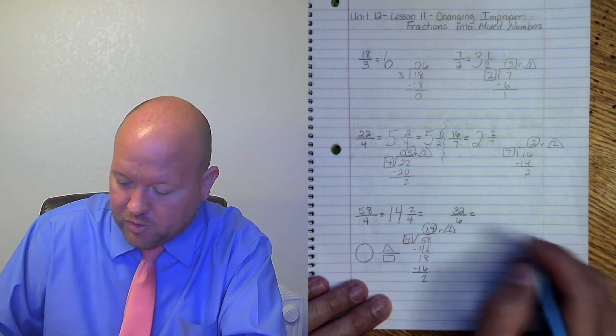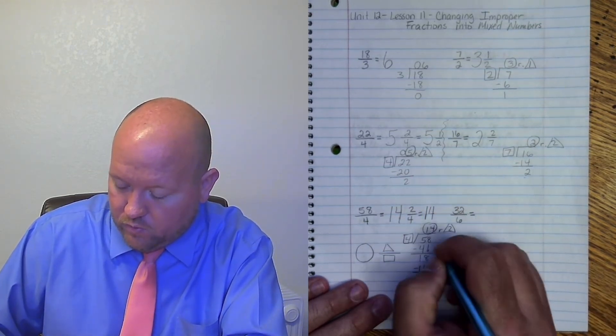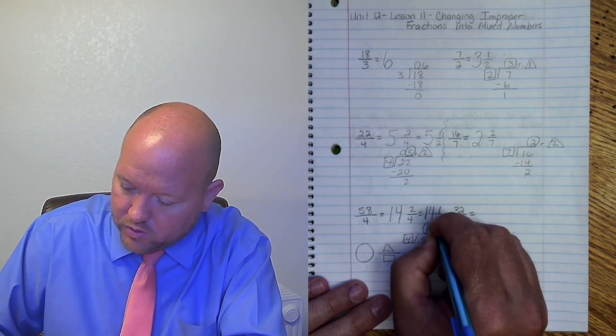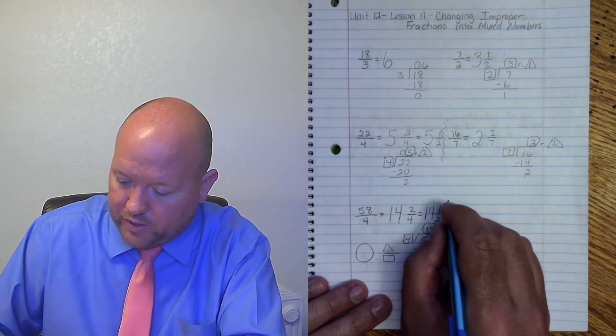And again I can simplify this. So bring my whole number over. 14. 2 divided by 2 is 1. 4 divided by 2 is 2. So 14 and a half.